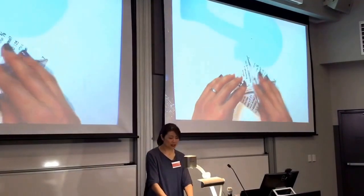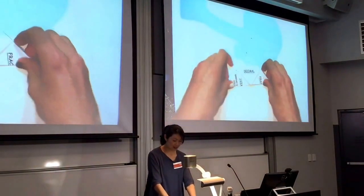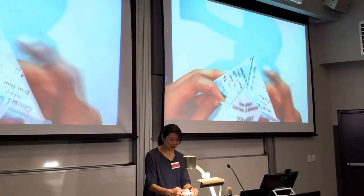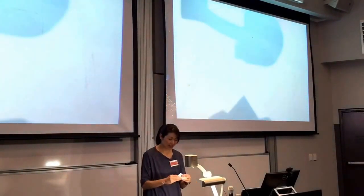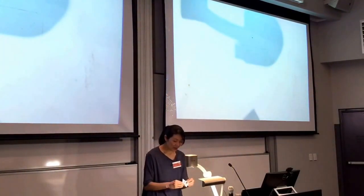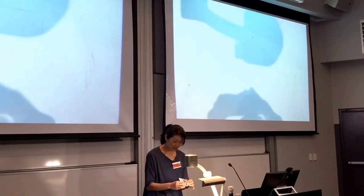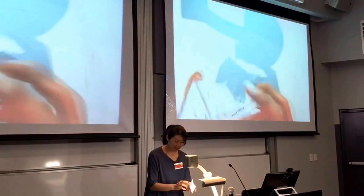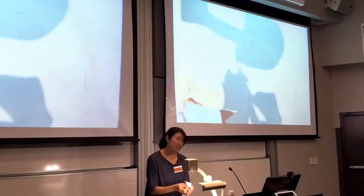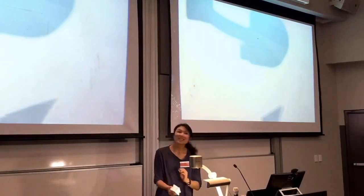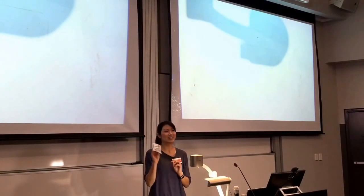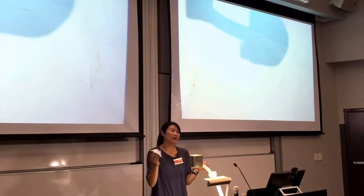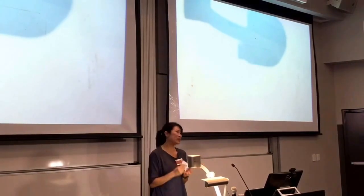To finish this off, you make a crease like this, and this turns into a shadow box. Put your fingers in here. So here we have a shadow box. This can be used as an individual revision tool or can be used as a game tool.